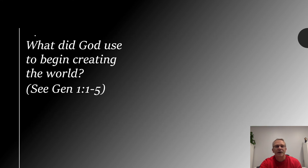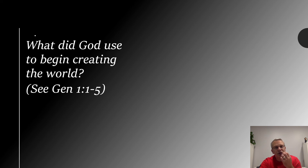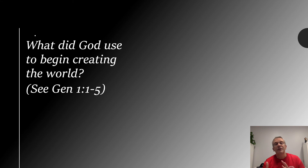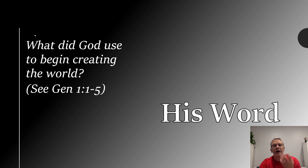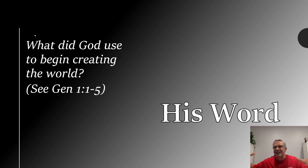What did God use to begin creating the world? Looking at Genesis 1:1–5, in the beginning God created the heavens and the earth, and then what it describes is how God spoke light into existence. He separates the light from the darkness, calls the light day and the darkness night — it's the end of the first day, and it is good. So what does God use to begin creating the world? He uses his Word. There was nothing except for him, and he spoke it into being.